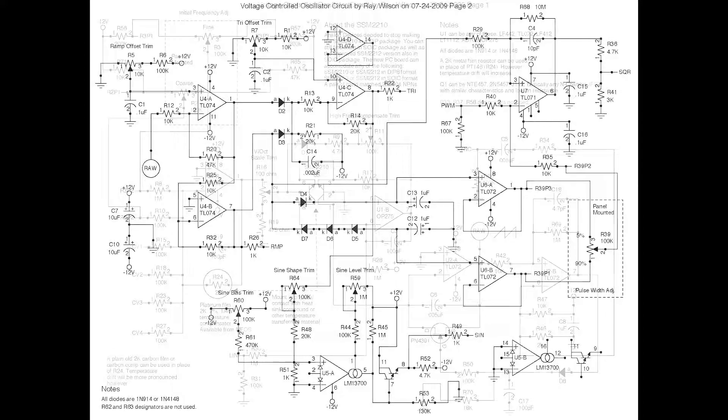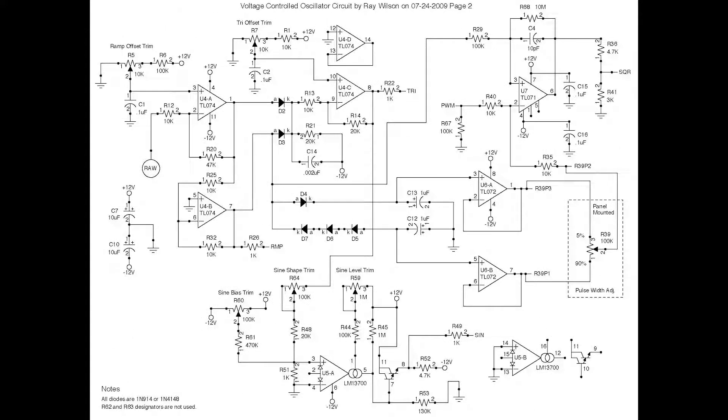And then the second page of the schematic we basically have the waveform shaping circuitry. Where you have first of all your triangle wave. The circle with the raw in it, that is the ramp going into the stage there. There's an offset trim on every single one of these.